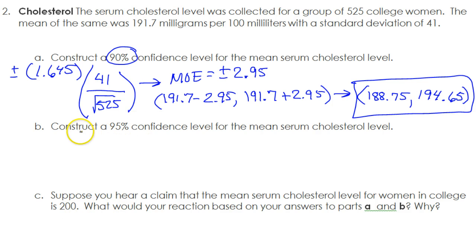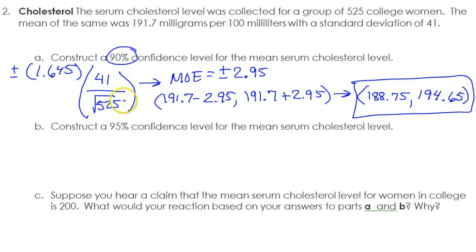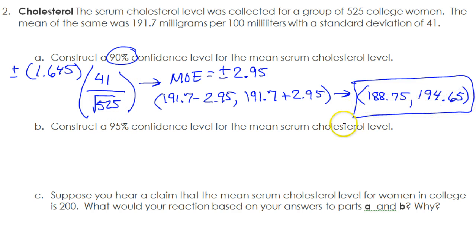Part B: construct a 95% confidence interval. Understand this — if you want more confidence, we're going to have to make our interval bigger. The bigger we make this interval, the more sure we can be that the truth is in there somewhere. So as we go from 90% confidence to 95%, we're expecting this interval to be wider.